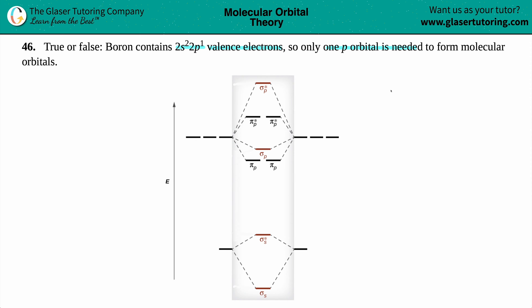Let's figure it out. So boron on the periodic table does contain 2s2, 2p1 valence electrons. Now, how many total electrons is that? Well, you just add up the upper right-hand corner numbers. 2 plus 1 is a total of 3 valence electrons.